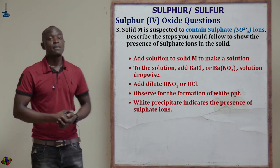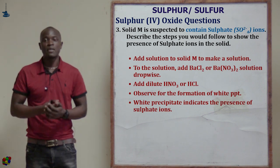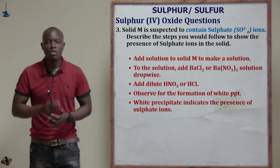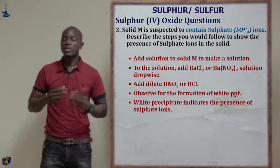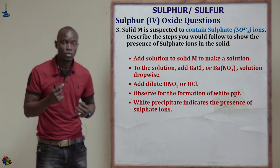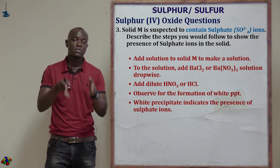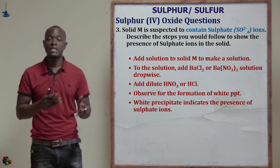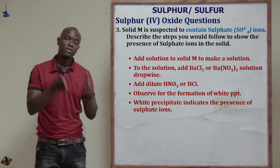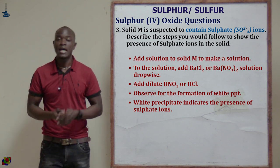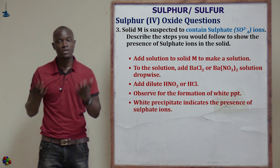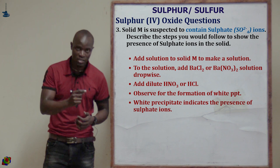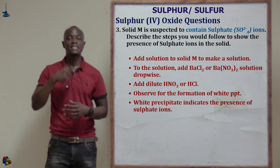Question three asks: solid M is suspected to contain sulfate ions — describe the steps to show the presence of sulfate ions. Remember the test for sulfate and sulfite ions: first react with barium chloride, then react with an acid — hydrochloric acid or nitric acid. If the white precipitate persists, we know that it is sulfate. If the white precipitate dissolves, it is sulfite.